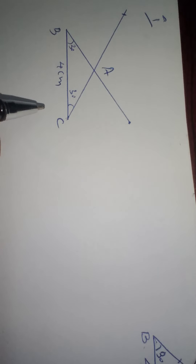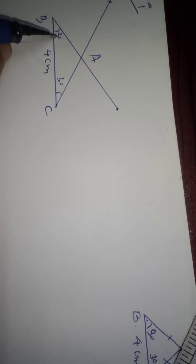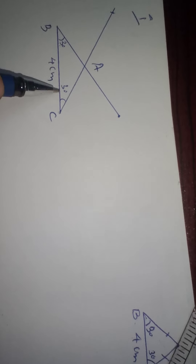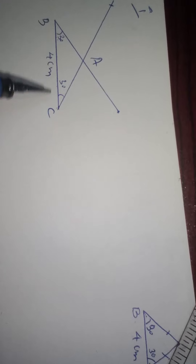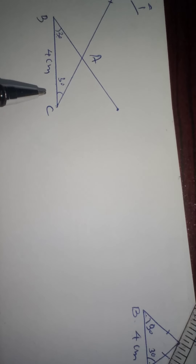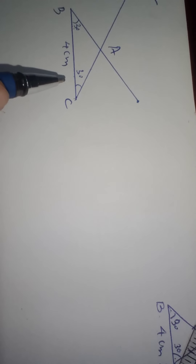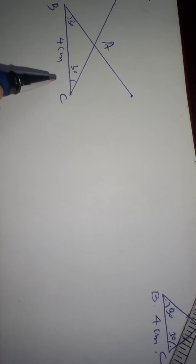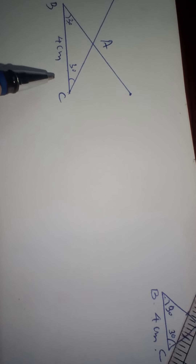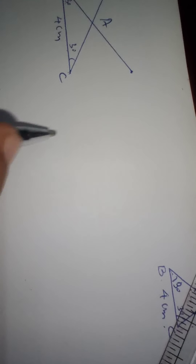There are two more questions you have to do yourself. The second one: base is 6.2 cm and base angle is 45 degrees — so both base angles must be 45. The baseline is 6.2, and since you are using the protractor it is easy to draw. Two more questions — that is also homework.